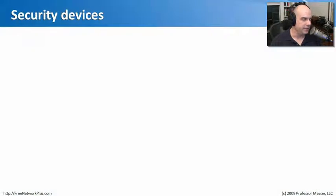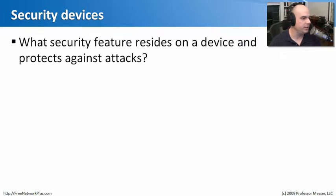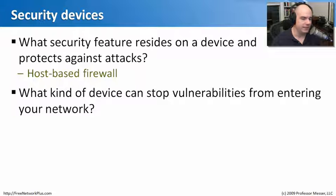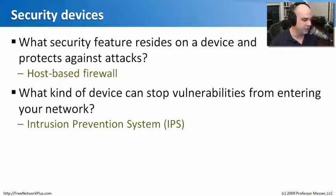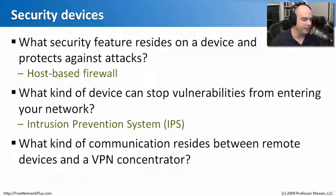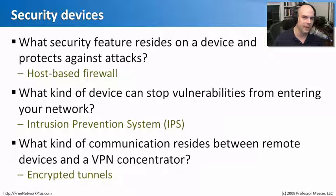Let's review what we've learned about security devices. First: what security feature resides on a device and protects against attacks while sitting on that device? That would be a host-based firewall. Second: what kind of device can stop vulnerabilities from entering your network? That would be an intrusion prevention system. Third: what kind of communication exists between remote devices and a VPN concentrator? It is a completely encrypted tunnel between your laptop and the VPN concentrator inside your network.